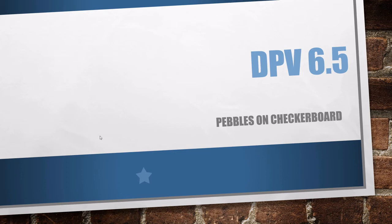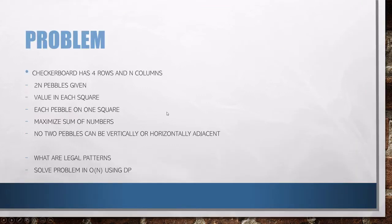Hey guys, welcome to another episode on dynamic programming. Today we are doing DPV 6.5, and I had done a video earlier, but I'm trying to redo this video to make it even more clearer as to how the algorithm proceeds. Just a reminder, the problem is pebbles on checkerboard, and just recapping the problem: